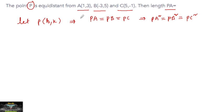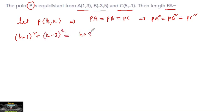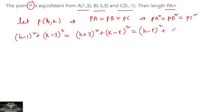So Pa² from point P to point A(1,3) can be written as: (h−1)² + (k−3)² = (h−3)² + (k−5)² = (h−5)² and so on.